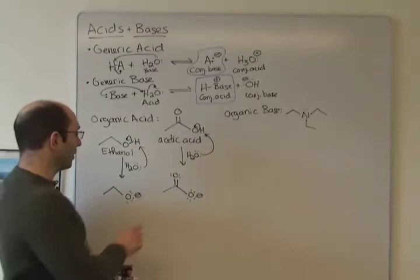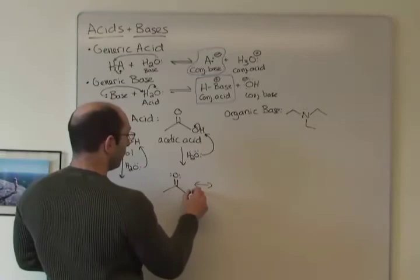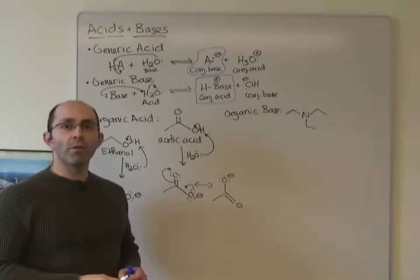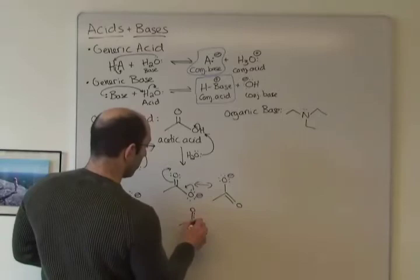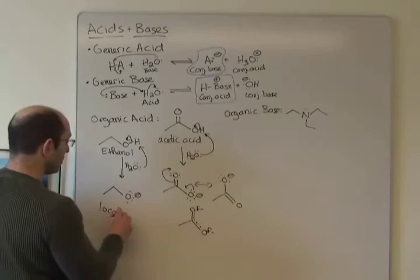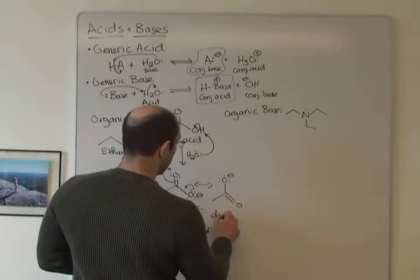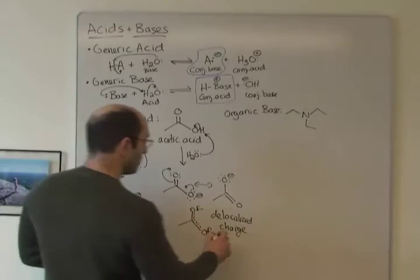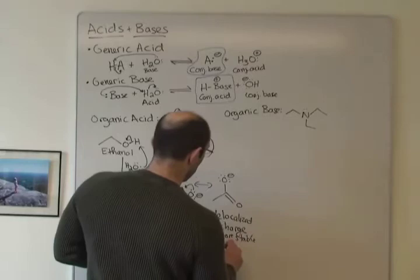We end up with a carboxylate anion. One question is: how does acetic acid acting as an acid compare to something like ethanol acting as an acid? In both cases we have a proton on oxygen that we're losing and we yield a negative charge on oxygen. Which conjugate base is more stable? Thinking about resonance, in the acetate anion's case we have a more stable conjugate base because we have a delocalized charge — we can draw the resonance hybrid.